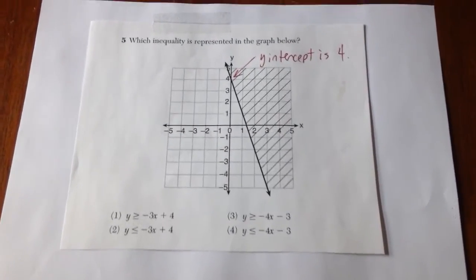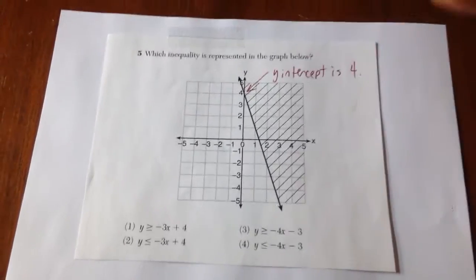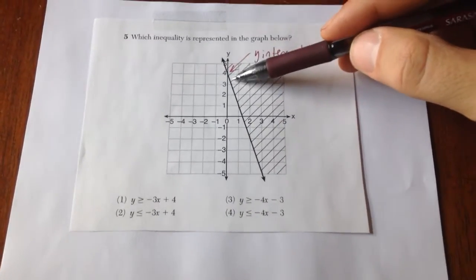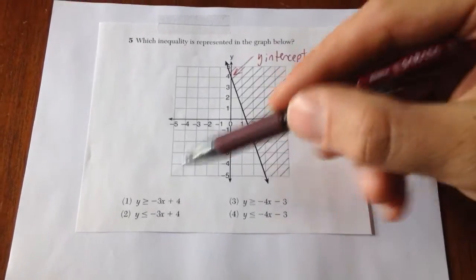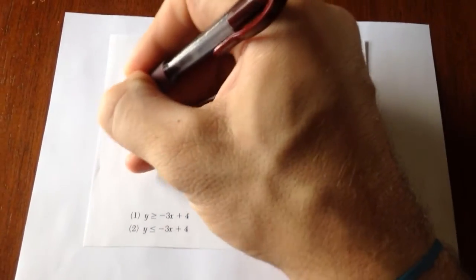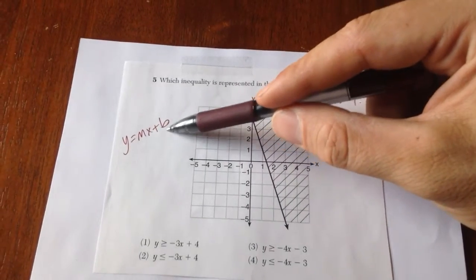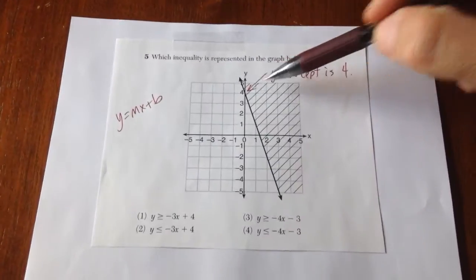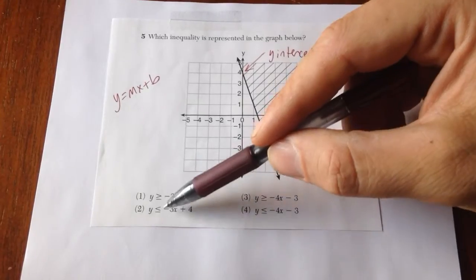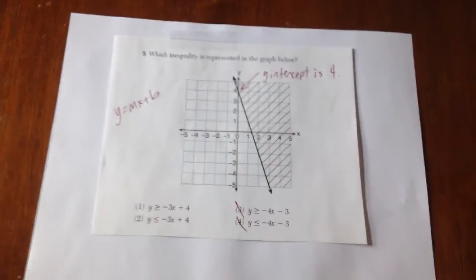Number five, which inequality is represented in the graph below? We know that the y-intercept of this line is positive four. And with the slope intercept form of a line, we know that this constant number is the y-intercept. If I wanted it to be four, my only two choices are one and two. I can cross off three and four.